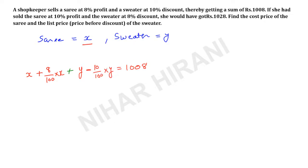Now I will further simplify this. So this will be X plus 8X upon 100, plus this will be Y minus 10Y over 100, and that is equals to 1008. Now I will take LCM over here. So LCM will be 100, so this will be 100X plus 8X, 108X upon 100, plus here again LCM will be 100, 100Y minus 10Y, that is 90Y over 100, is equals to 1008.